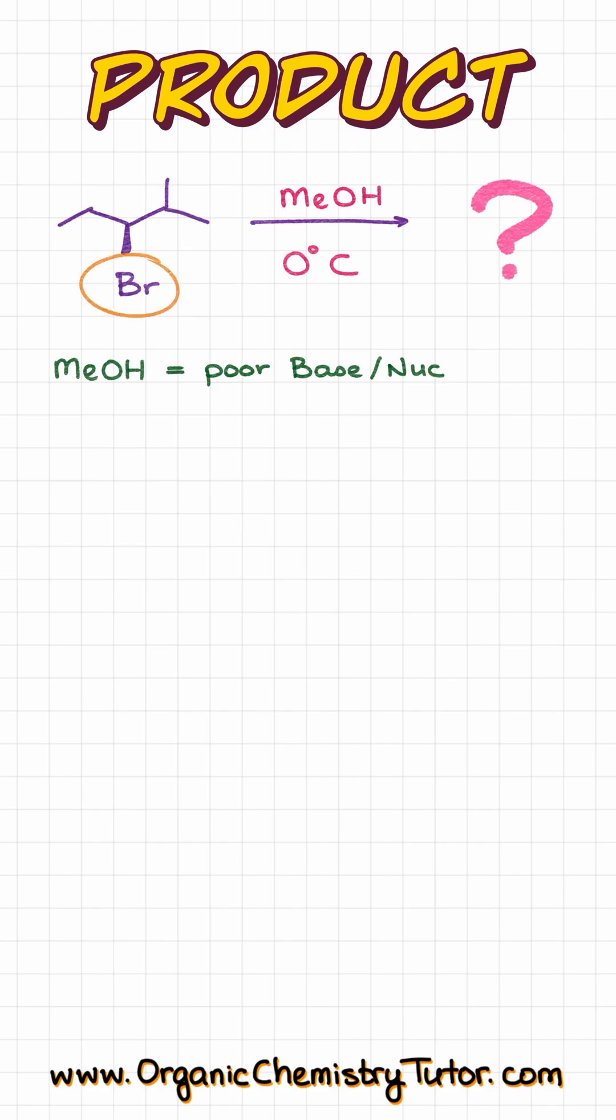Our leaving group, bromide, is sitting on the secondary carbon, and we are doing the reaction at 0 degrees centigrade, which is low temperature conditions, which means that we are looking at an SN1 reaction in this case.